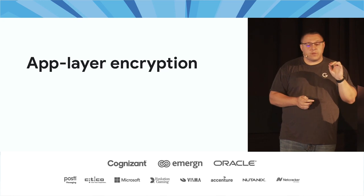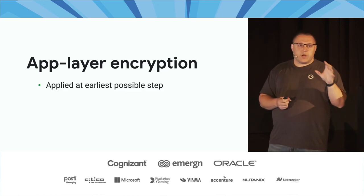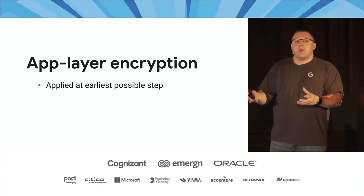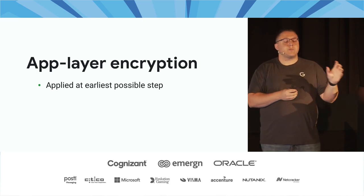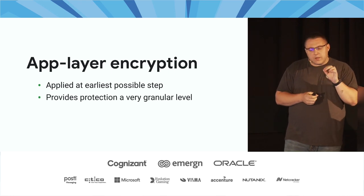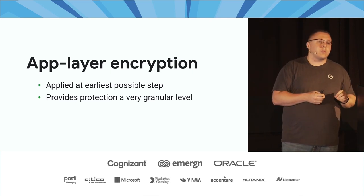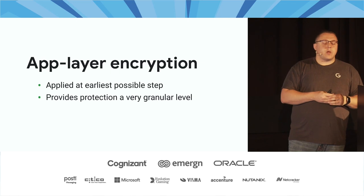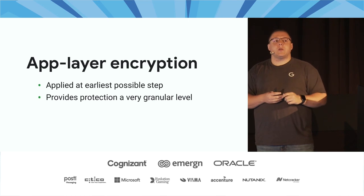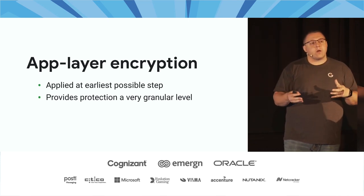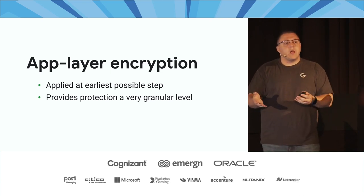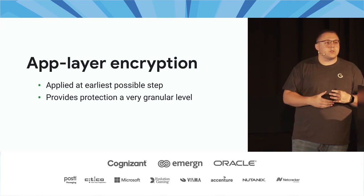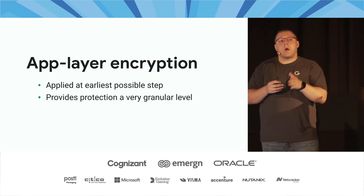Application-layer encryption is applied at the earliest possible step in a service-oriented architecture. Say a user gives you their credit card — your application encrypts that data before sending it to the database or any other service. Applied earliest, it gives the most granular protection. Your service can generate a new encryption key for each credit card number, so instead of all credit card numbers being encrypted with the same key, each has its own. If an attacker gains access to your database or a backup, they don't have the plaintext, and brute-forcing one key doesn't decrypt the others.